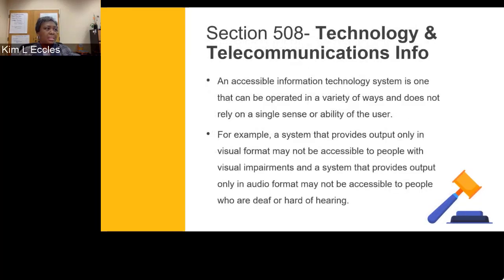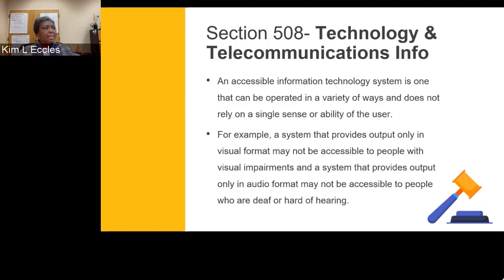An accessible information system is one that can be operated in a variety of ways and does not rely on a single sense or ability of the user. For example, a system providing output only in visual format may not be accessible to people with hearing impairments, and a system providing only audio output may not be accessible to people who are deaf or have visual disabilities.